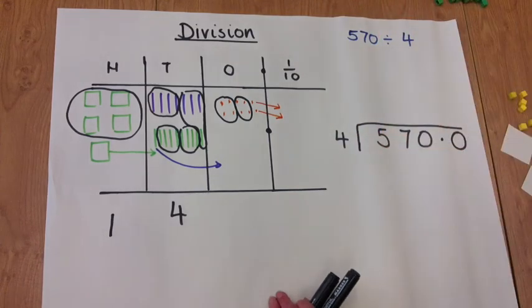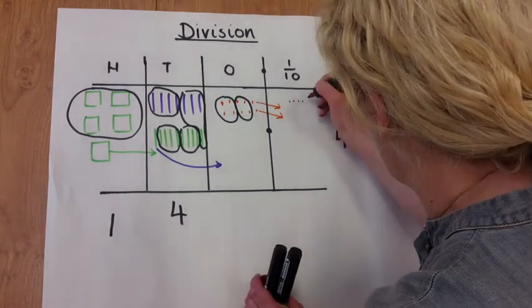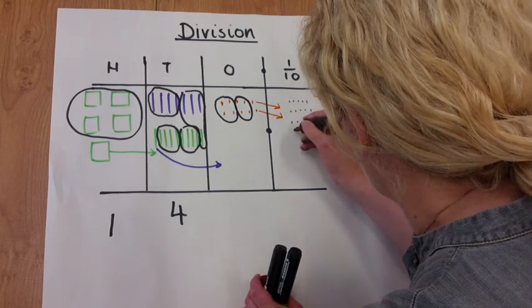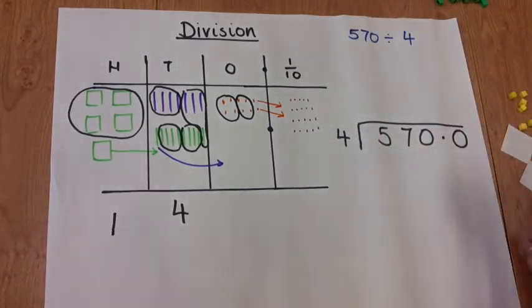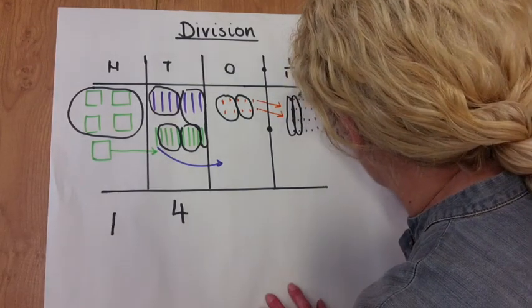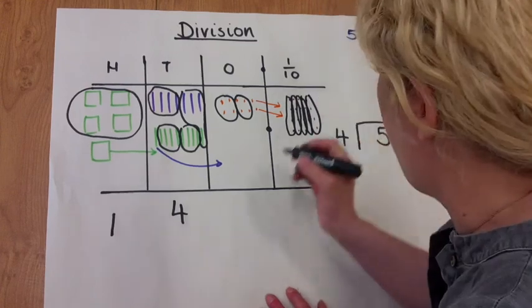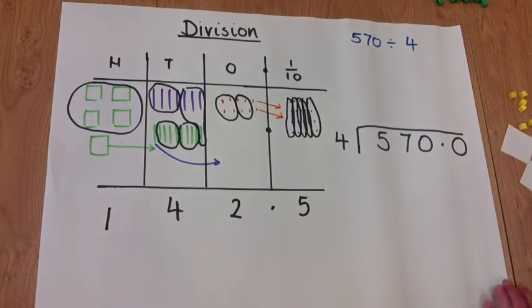Which we regroup into 10 tenths each. So there's going to be 20 tenths in the tenths column. So 4 groups. 142.5.